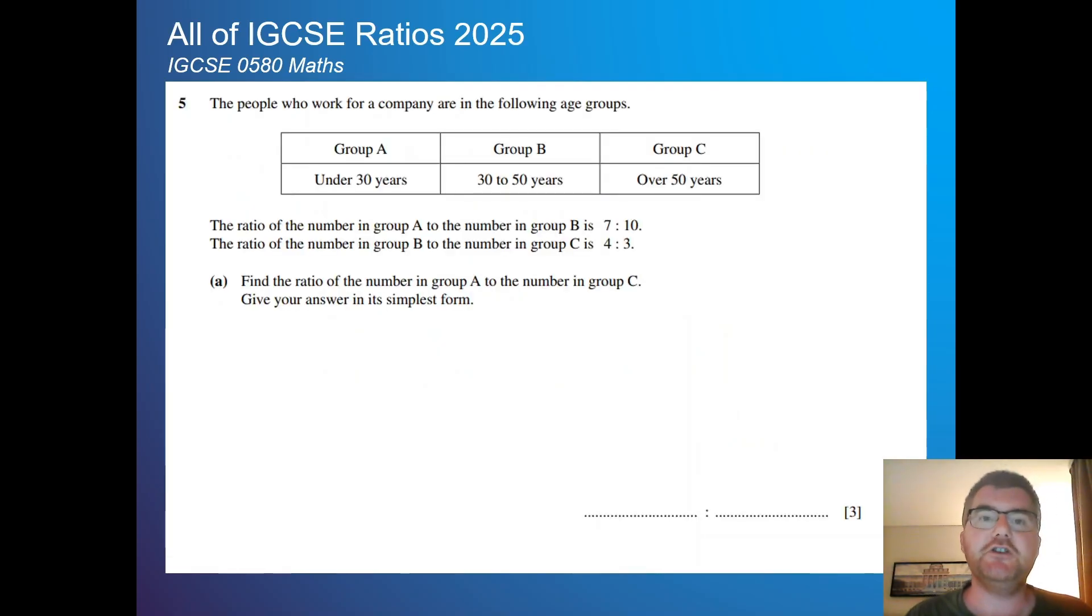On to question 5. I like this question. It's a little bit more on the difficult side. So the people who work for a company are in the following age groups: either under 30, between 30 and 50, or over 50. The ratio of number in group A to group B is 7 to 10, and ratio of group B to group C is 4 to 3. Find the ratio of the number in group A to group C.